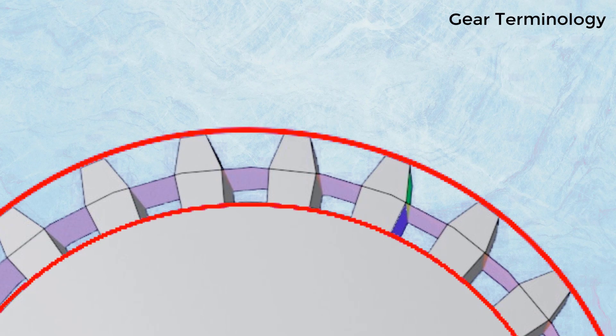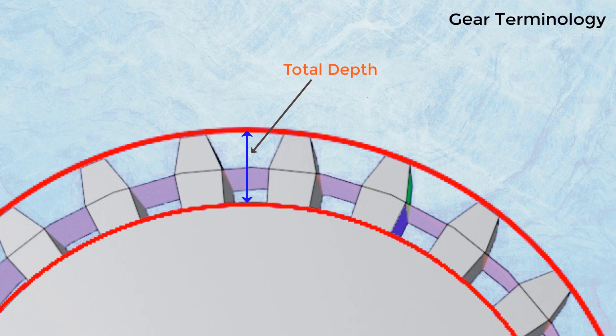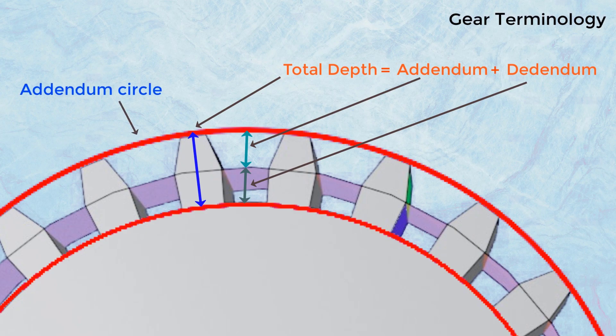Total Depth: The distance from the top land of the tooth to the bottom of the tooth is known as the total depth of the tooth. Total depth can also be given as the sum of the addendum and dedendum of a gear. It is the distance between the addendum circle to the dedendum circle measured along the radial direction.